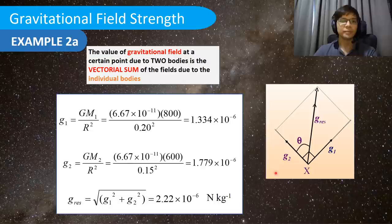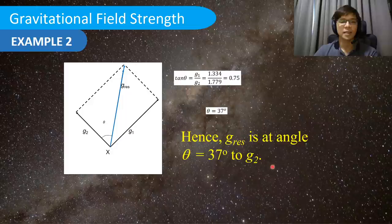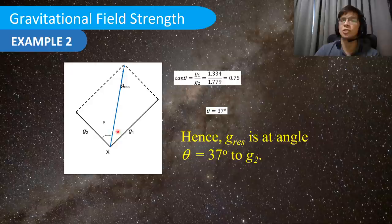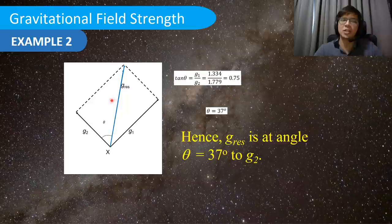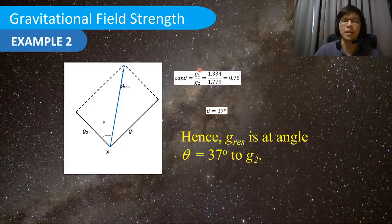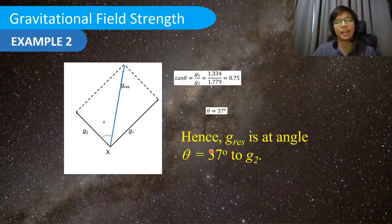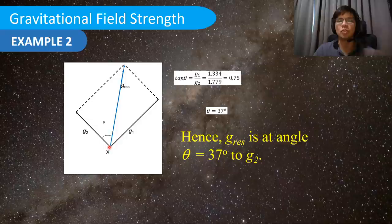To complete the answer for part A, we also need to give the direction since gravitational field strength is a vector. We calculate the angle θ clockwise from g2 using tan θ = g1/g2, giving θ = 37°. So the resultant gravitational field strength is 2.22 × 10⁻⁶ N/kg at 37° clockwise from g2.